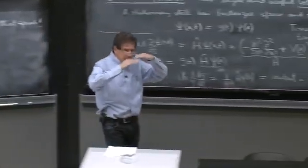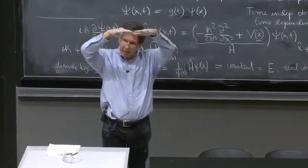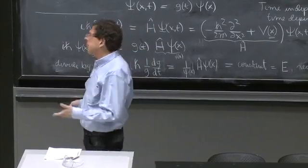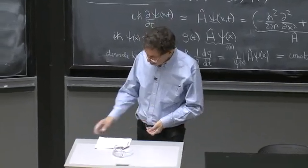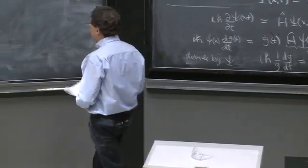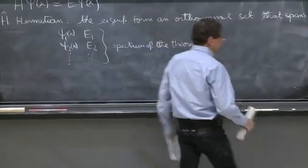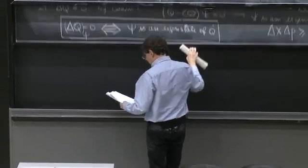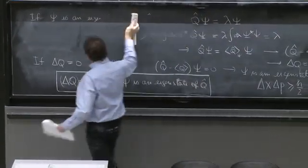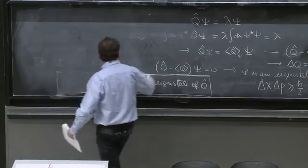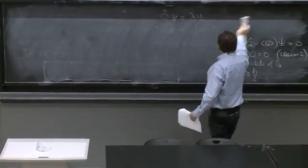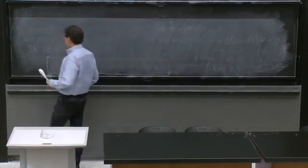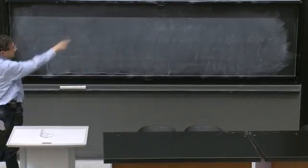The energies may be many, may be discrete, or maybe there's a continuous part. There are all kinds of varieties, but your task is to find those for any problem. So the equation that we're trying to solve is now rewritten. It's a second order differential equation with a potential in general.